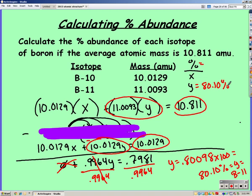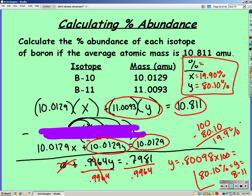Our percents should add up to 100, so once you get one of your variables, the other one is easy because you just subtract from 100. So 19.990 percent.